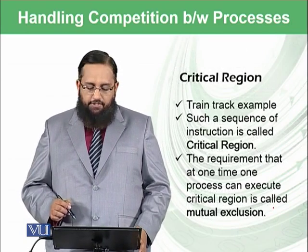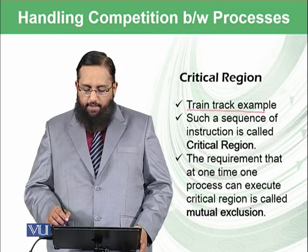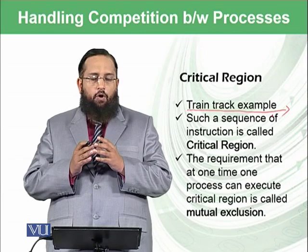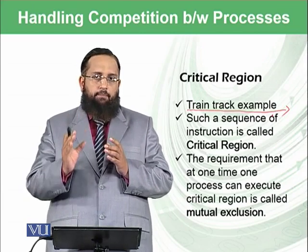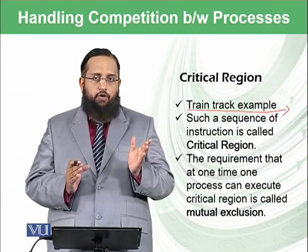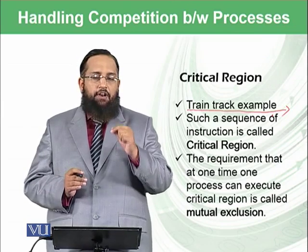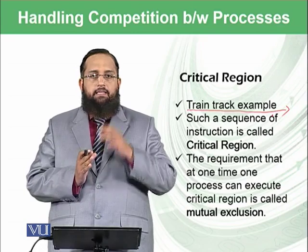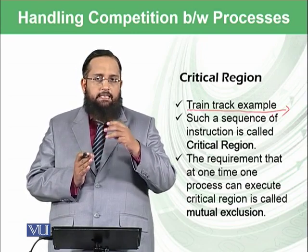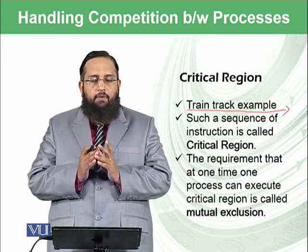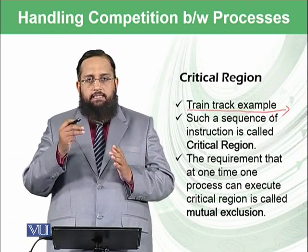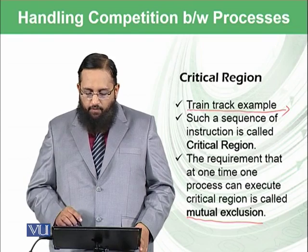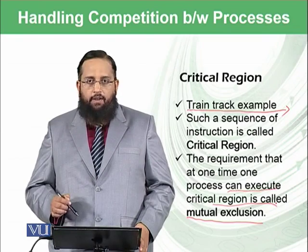There is also the concept of a critical region. You might know the famous example of a train track — on railway tracks there is a dedicated track where if one train is on that track, other trains are forbidden to use it. This is called a critical region. When process A is executing these three instructions, it is in a critical region. At one time, only one process can execute this critical region. Such a requirement is known as mutual exclusion — the requirement that at one time only one process can execute the critical region.